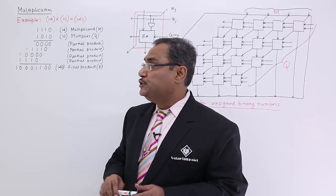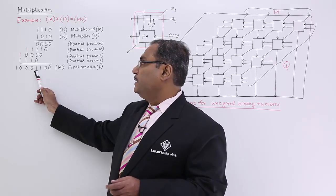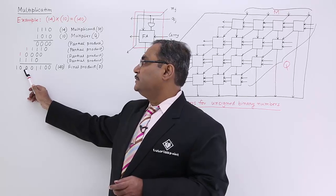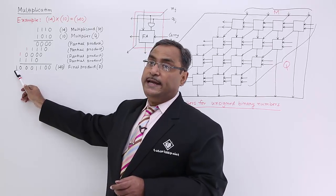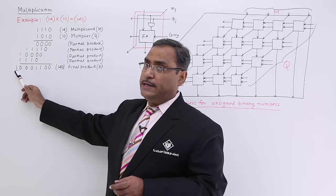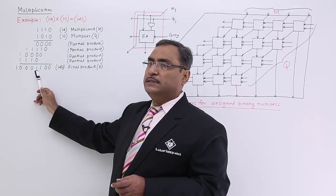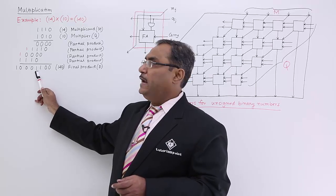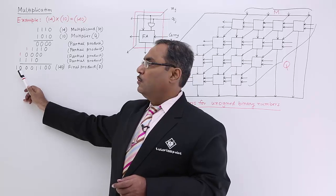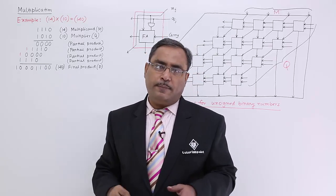Is it 140? Let me check. This place value is 8, 16, 32, 64, 128. So this is 128. So 128 plus 8 plus 4. 8 plus 4 means 12. 128 plus 12 means 140. So it has come.